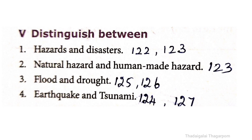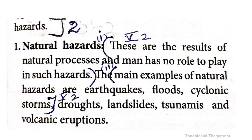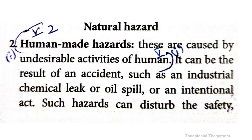Second distinction: Natural hazard versus human-made hazard. The answer is on page 123. Natural hazards are the result of natural processes, and man has no role to play in such hazards. Main examples include earthquakes, floods, and cyclonic storms.